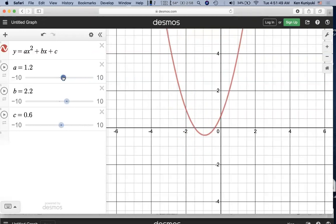So a is very meaningful. It gives you the shape of the parabola and its orientation. But b and c, their impact is less clear.